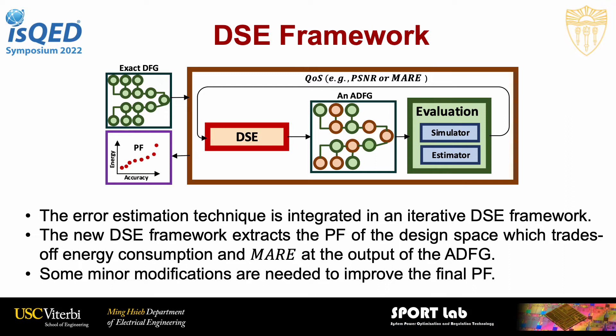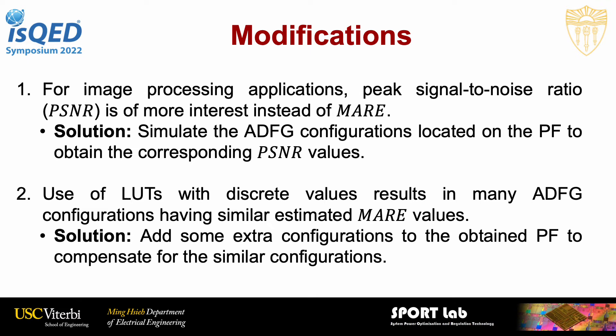There are some minor modifications needed to improve the final Pareto frontier. First, for image processing applications, peak signal-to-noise ratio (PSNR) is a more interesting metric than mean absolute relative error distance. So after the modified DSE framework generates the Pareto frontier, we simulate the ADFG configurations again to obtain their corresponding PSNR values. The second issue is that lookup tables have discrete values, which may result in many ADFG configurations with similar estimated output error values, potentially damaging the accuracy of our method. The solution is to add extra configurations based on a specific format to the obtained Pareto frontier and perform simulations on those configurations too.